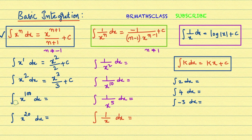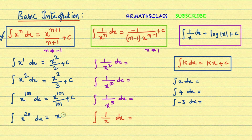Similarly, integral of x power 100 dx is x power 101 divided by 101 plus c. It is very easy to understand. Applying this first formula again: integral of x power 20 dx gives x power 21 divided by 21 plus c.